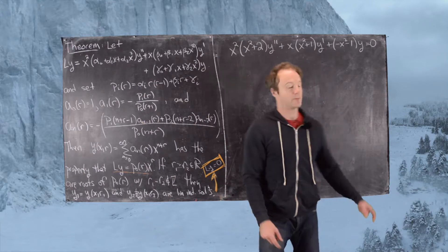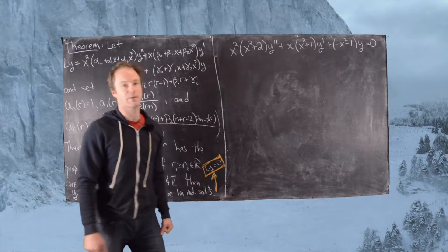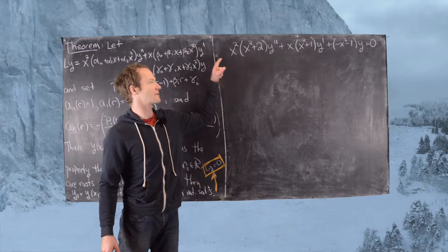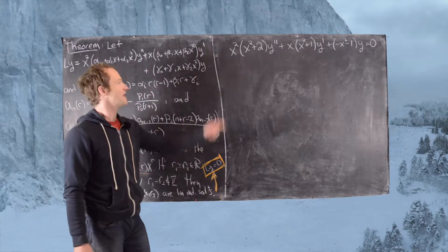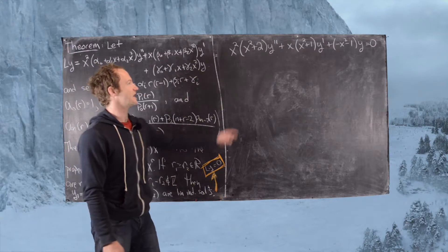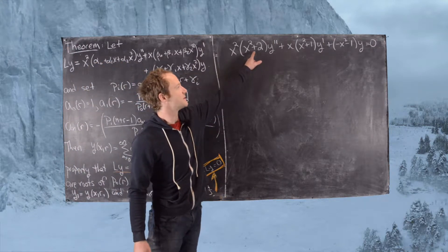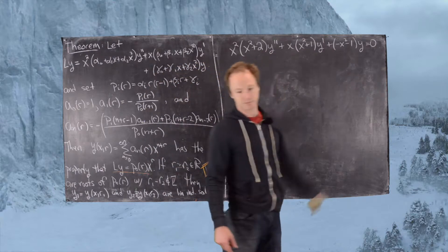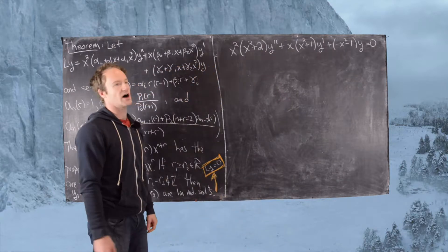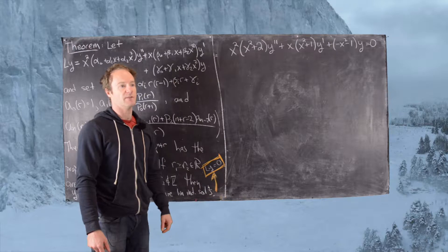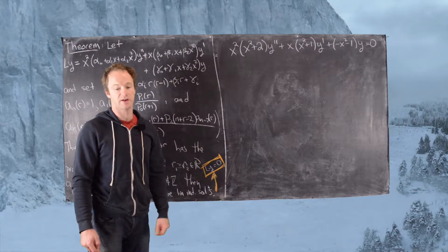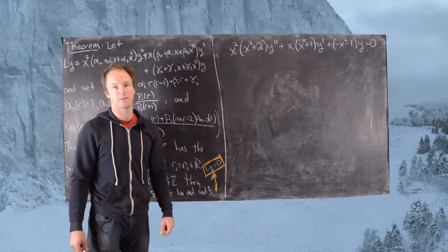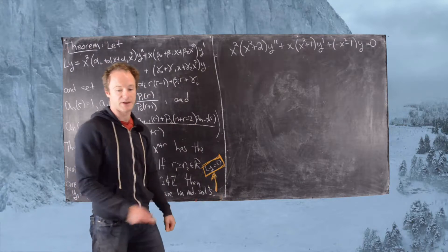The example we're looking at is clearly of this form — we have x squared times a quadratic polynomial, and so on. This is a slight simplification in that we don't have a linear part in each of these polynomials, which will allow us to find a nicer solution at the end. Now let's write down the polynomials P0, P1, and P2.